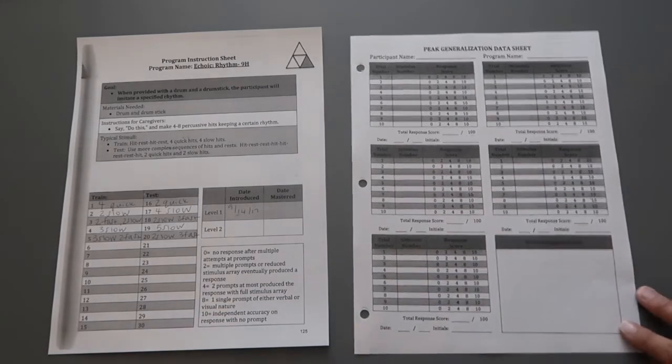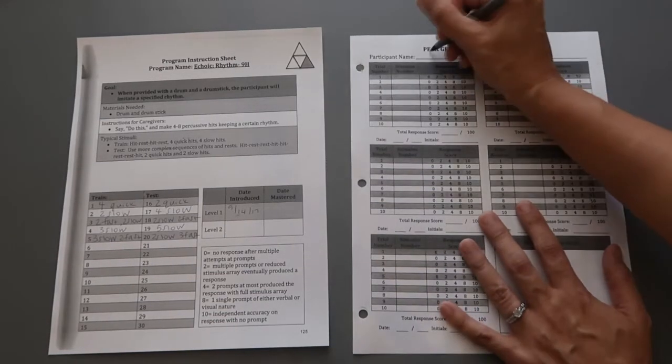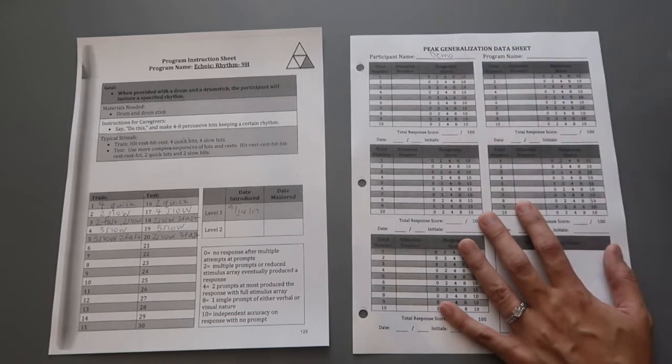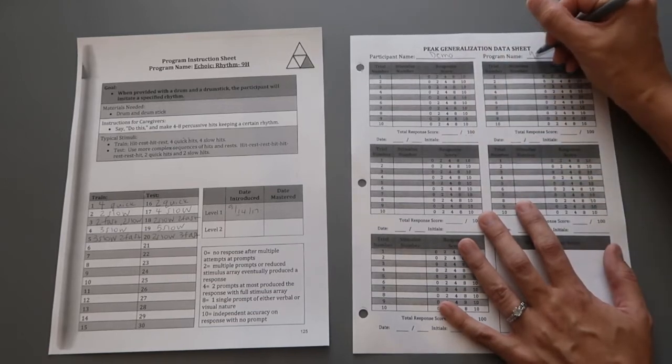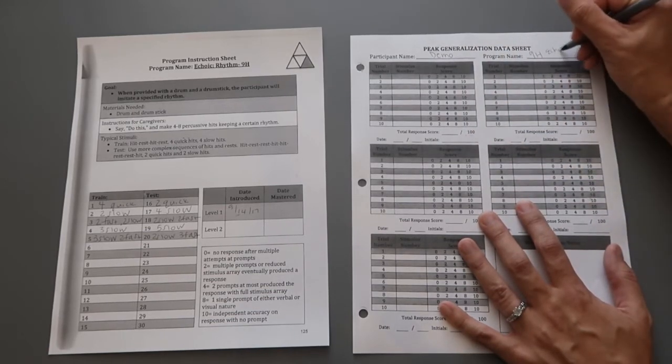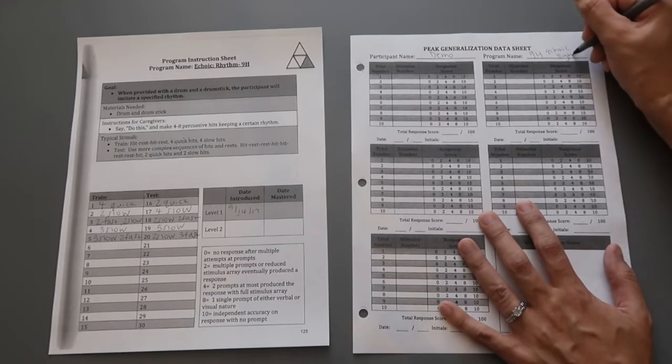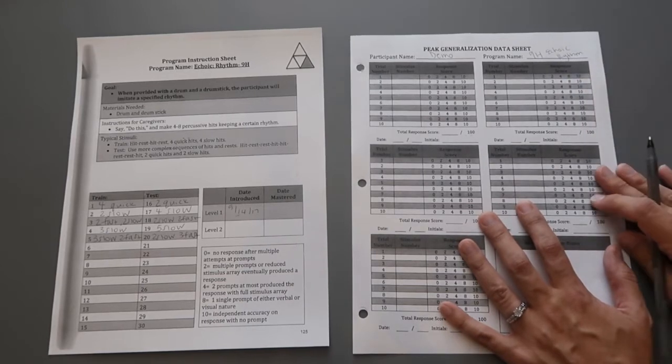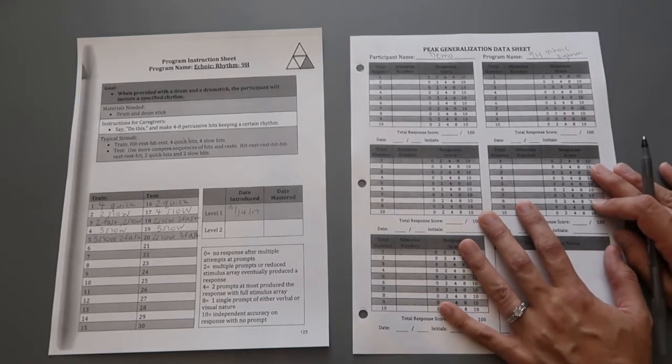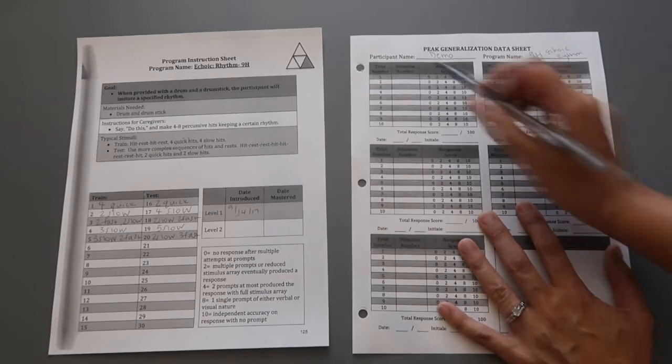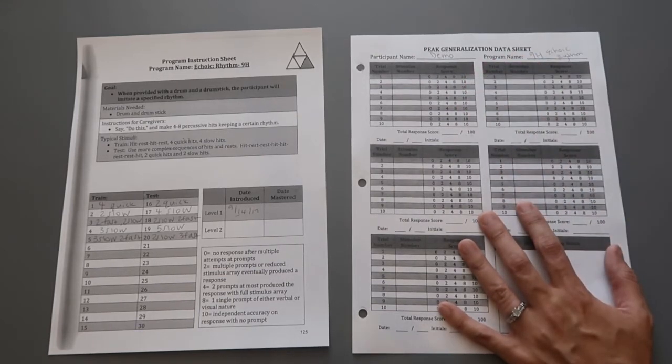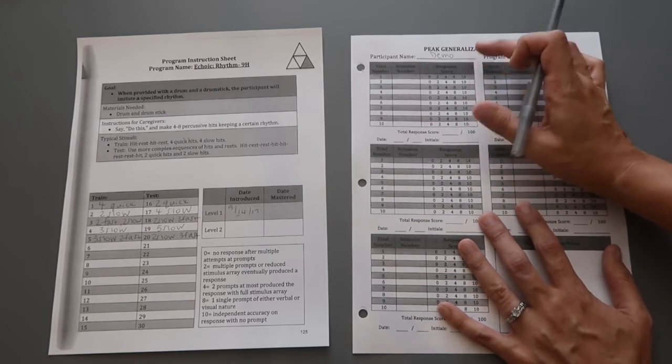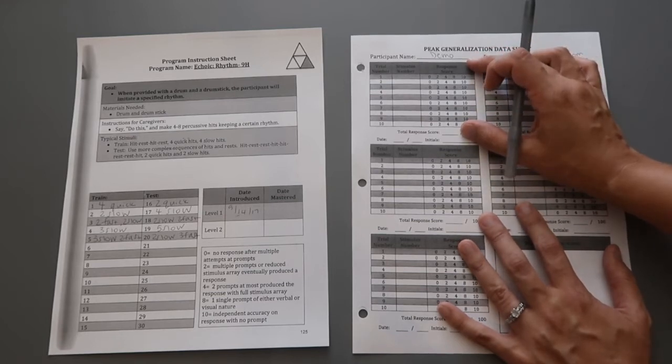And then now transferring over to the generalization data sheet. Participant name, I'm just going to put demo, and program name, this is 9H echoic rhythm. And then for generalization, you're going to be intermixing train and test stimuli within one block. So you're only going to be still doing one block of ten trials, but you're going to have train and test mixed in at the same time.